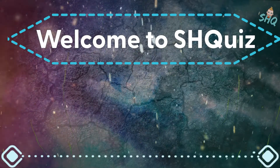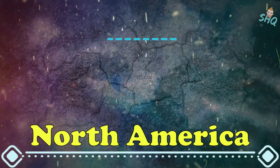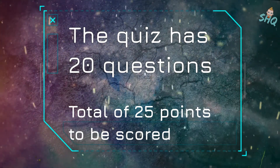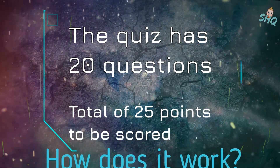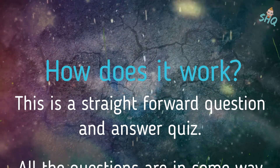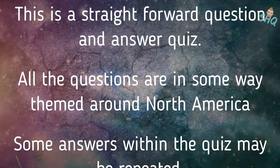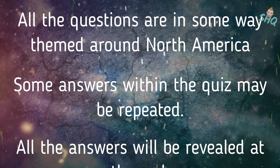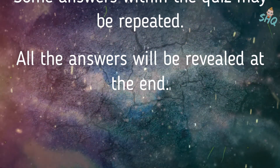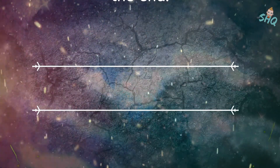Welcome to Shquiz. The theme of this quiz is North America. The quiz has 20 questions with a total of 25 points to be scored. This is a straightforward question and answer quiz. All the questions are in some way themed around North America. Some of the answers within the quiz may be repeated and all the answers will be revealed at the end. Good luck!